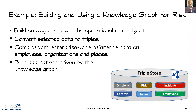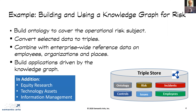We pile that all into a triple store and use it to drive an application. The critical thing is combining subject-specific triples with generic triples built from different places around the organization — that's where knowledge graph technology really comes in. You can integrate things much more easily. We've been working with Morgan Stanley for a few years and done a variety of other things beyond just risk: ontologies to help their equity research team track things like EBITDA, tracking technology assets, and information and records management.